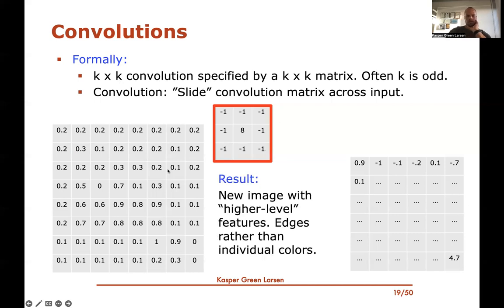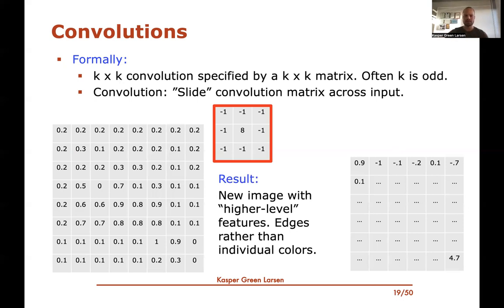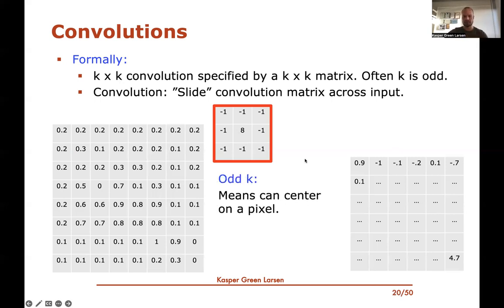After applying this convolution, we have a new image representing higher-level features. Rather than storing individual pixel colors, we're storing edges — highlighting where there's a big difference between neighboring pixels. The reason k is typically an odd number is that it gives a unique center, so we can center the convolution exactly on one of the original pixels.